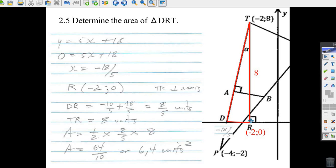So all we have to do is go half the base times the height: one half times eight over five times eight. Eight times eight is sixty-four. Two times five is ten. Sixty-four divided by ten is six point four square units. There's the area of triangle DRT.